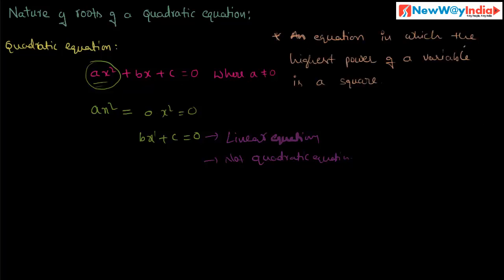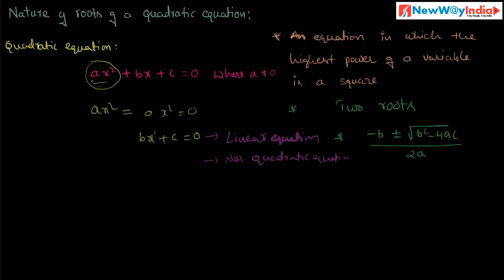So what is the quadratic equation? An equation in which the highest power of a variable is 2 is called a quadratic equation. Solving the quadratic equation gives us 2 roots. The standard form is ax squared plus bx plus c equals 0, where a is not equal to 0. To solve this standard form and find the roots we use the quadratic formula.